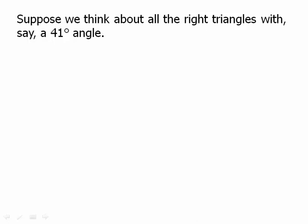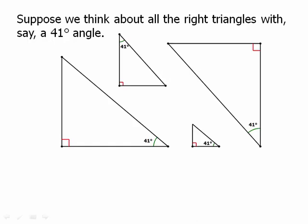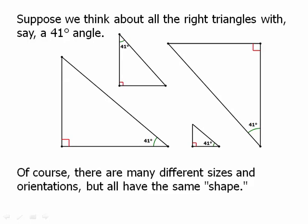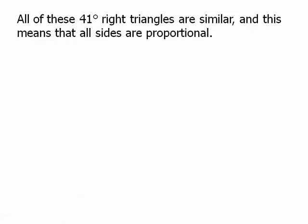So here are some random right triangles that have a 41 degree angle. Of course there are many different sizes and orientations, but all have the same basic shape. All of these 41 degree right triangles are similar because they all share a 41 degree angle as well as a 90 degree angle. That's two angles they share in common, so they have to be similar.